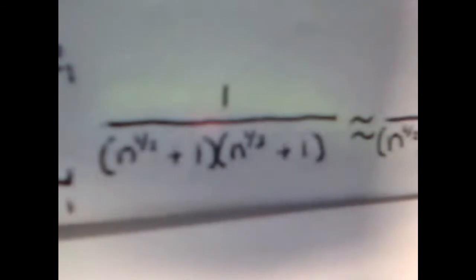Taking absolute values removes the alternating sign, leaving one divided by n to the one-half plus one, times n to the one-third plus one. This is approximately equal to one divided by n to the one-half, multiplied by n to the one-third. We can ignore those plus-one constants because as n approaches infinity, the ones become less and less important — even a plus 100 would be irrelevant. So we can just evaluate one over n to the five-sixths.